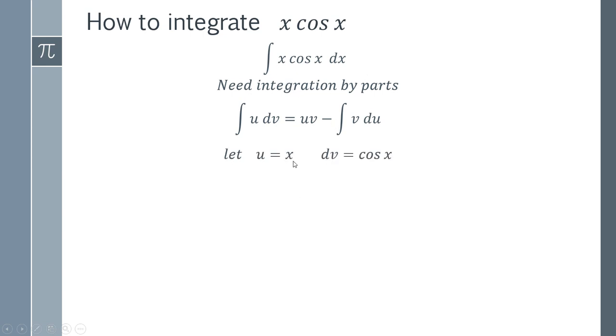So we're going to let u be equal to x, which we'll substitute into here later. We're going to let dv equal cos x.